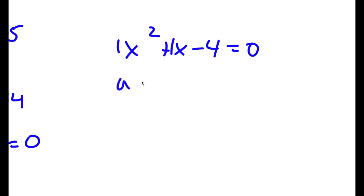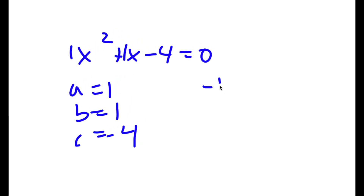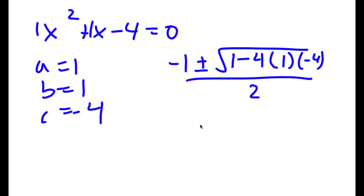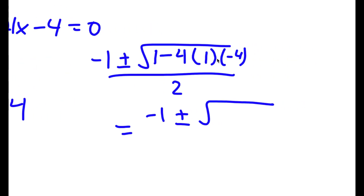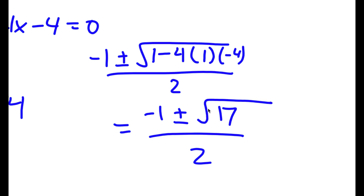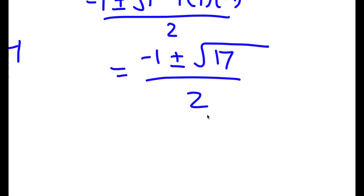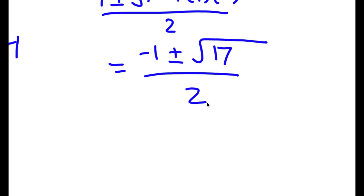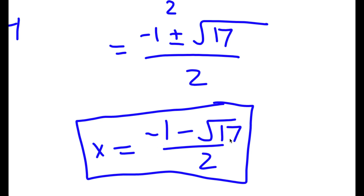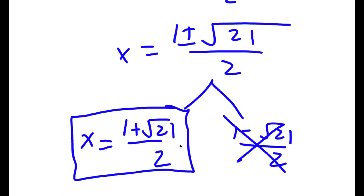Applying the quadratic formula with a equals 1, b equals 1, and c equals negative 4, I get negative 1 plus or minus the square root of 1 squared minus 4 times 1 times negative 4, all over 2. That gives negative 1 plus or minus the square root of 1 plus 16, over 2, which is negative 1 plus or minus the square root of 17, over 2. The only valid value from this case is x equals negative 1 minus the square root of 17, over 2. So my two final values of x are 1 plus the square root of 21 over 2, and negative 1 minus the square root of 17 over 2.